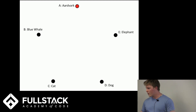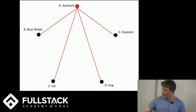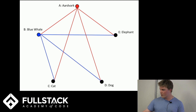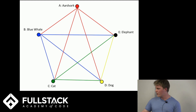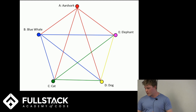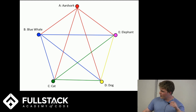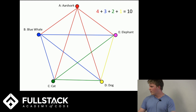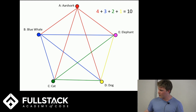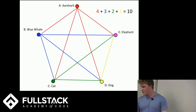We've got all the groups with aardvark. Then without double counting, three more groups for blue whale, two more for cat, one more for dog. By the time we get to elephant, all four groups it's in are already accounted for. So we end up with ten groups total.